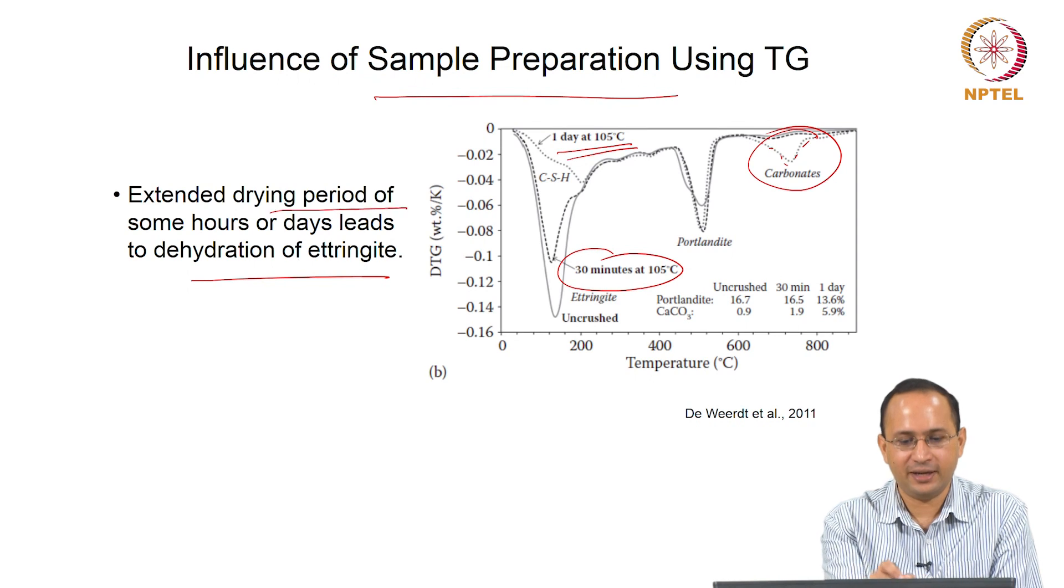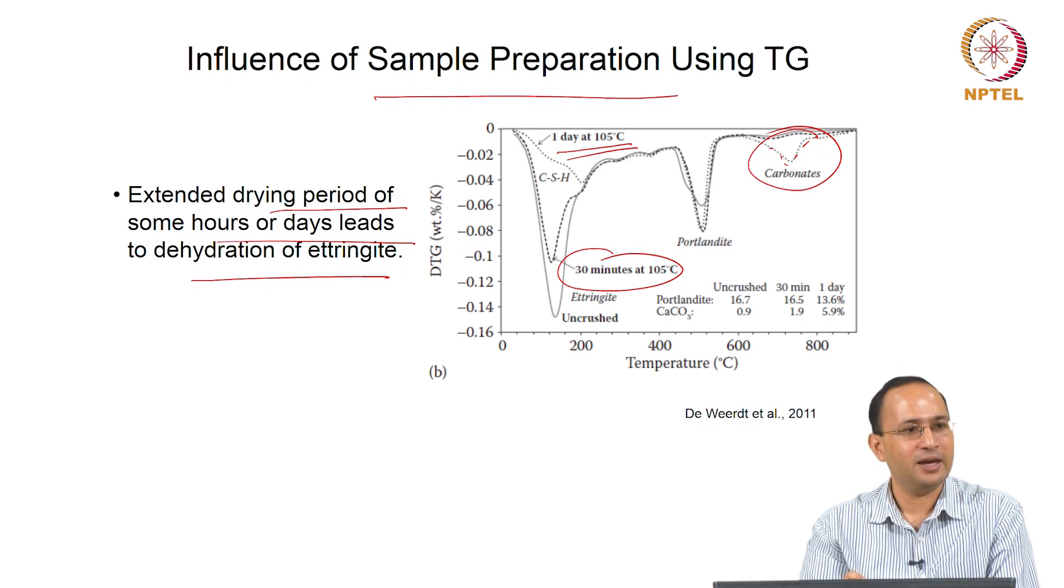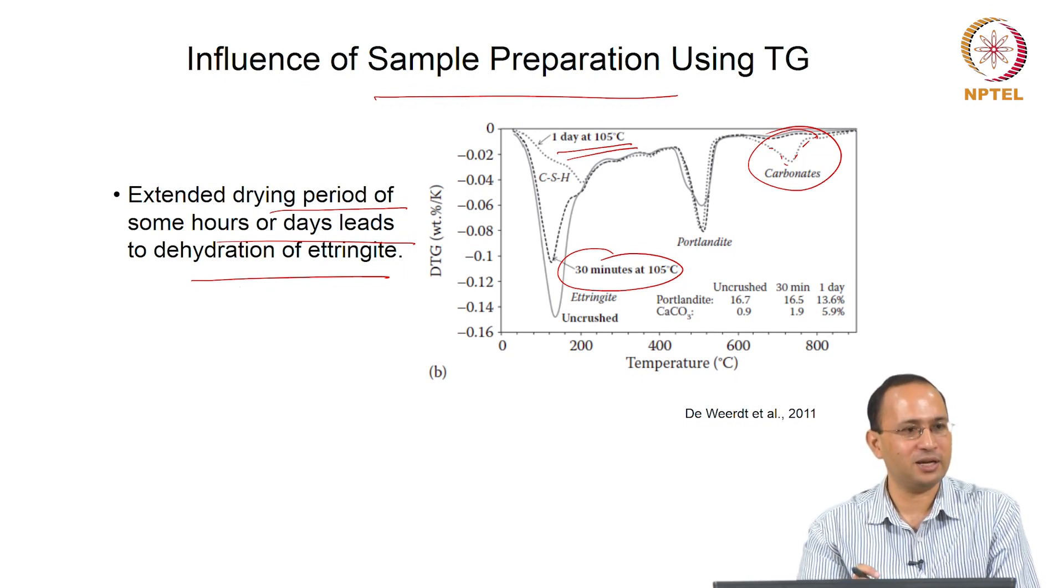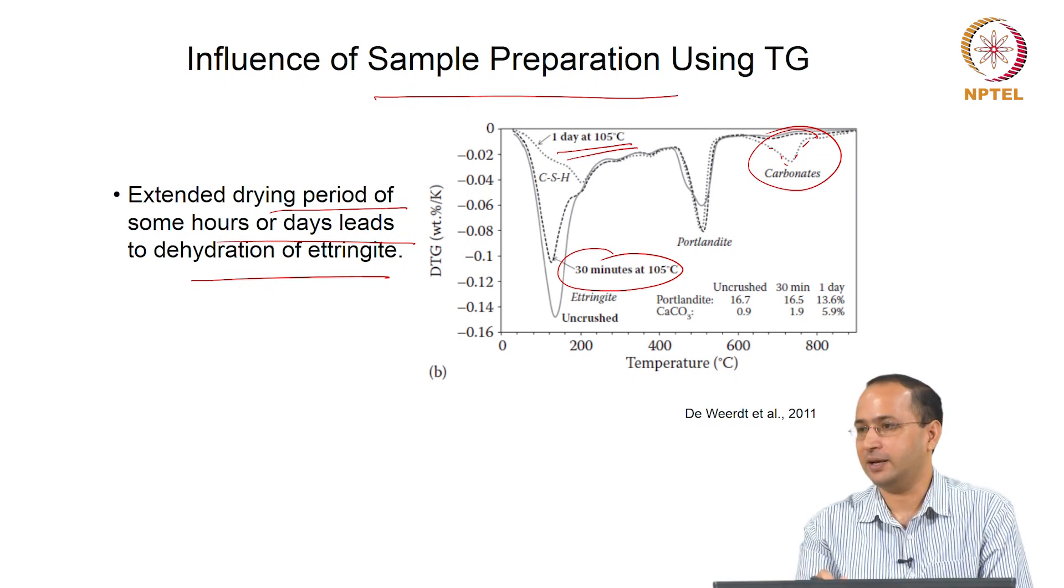Here you see extended drying period of some hours or days leads to dehydration, primarily affecting ettringite. You will also start losing water from CSH, but the difference you see is primarily because of the dehydration of ettringite.